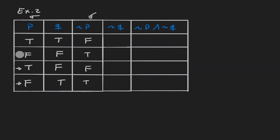Notice that I'm doing this one column at a time. Now let's take a look at the next column: we are negating Q. In the first row, Q was true, so the negation is false. In the second row, Q is false, so the negation is true. In the third row, Q is false, so the negation is true. And in the fourth row, Q is true, so the negation is false. So again, I'm looking at one column at a time.